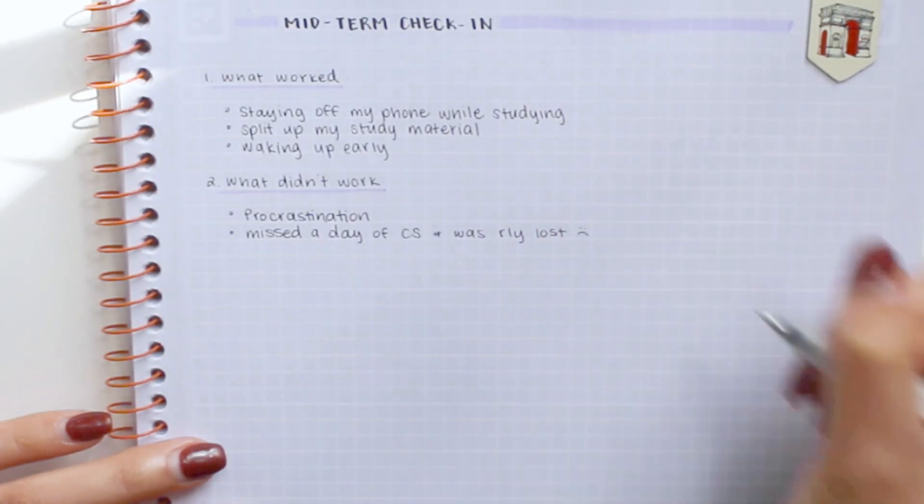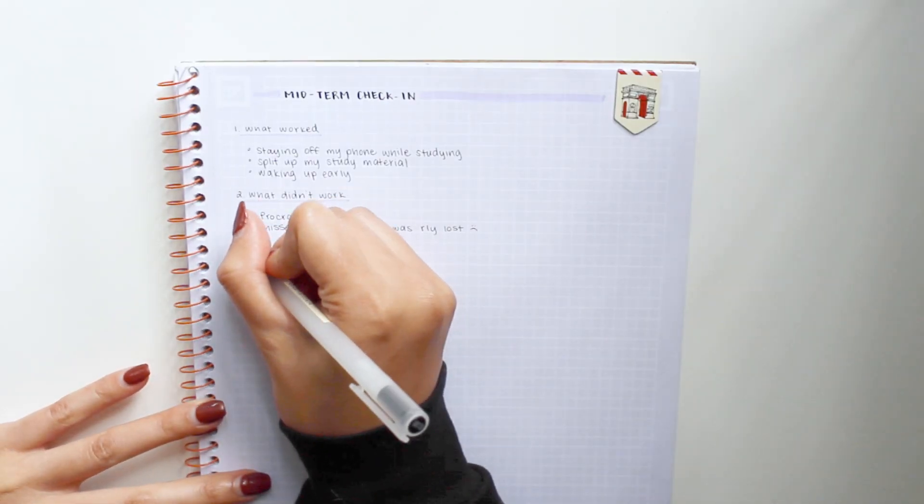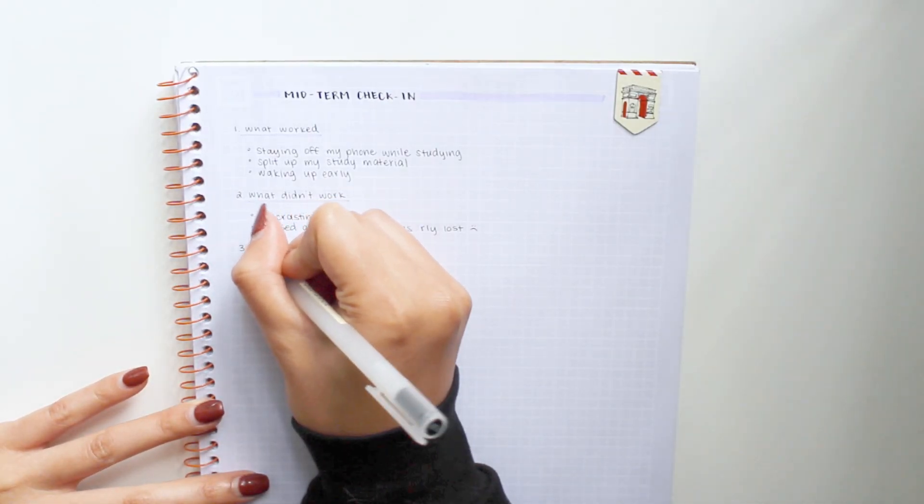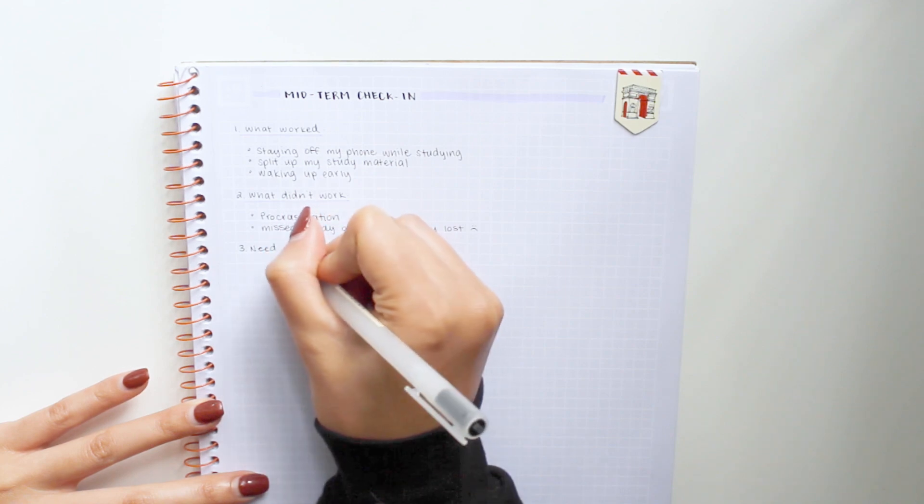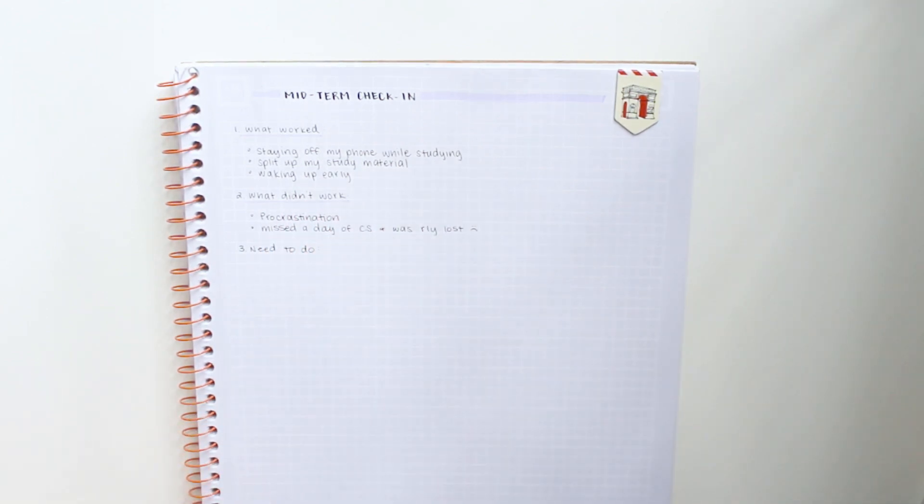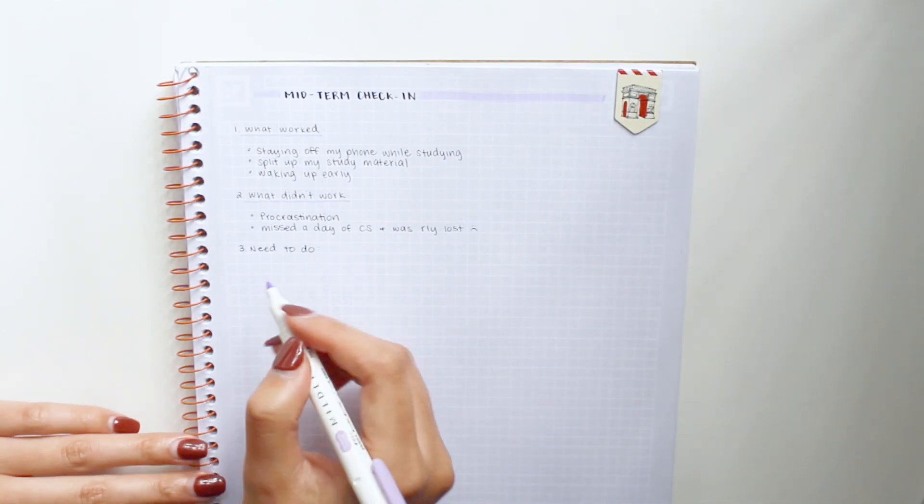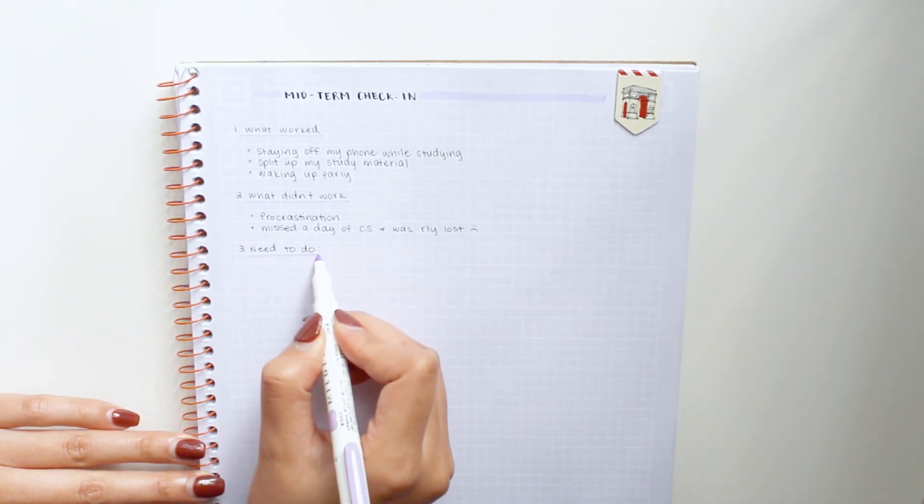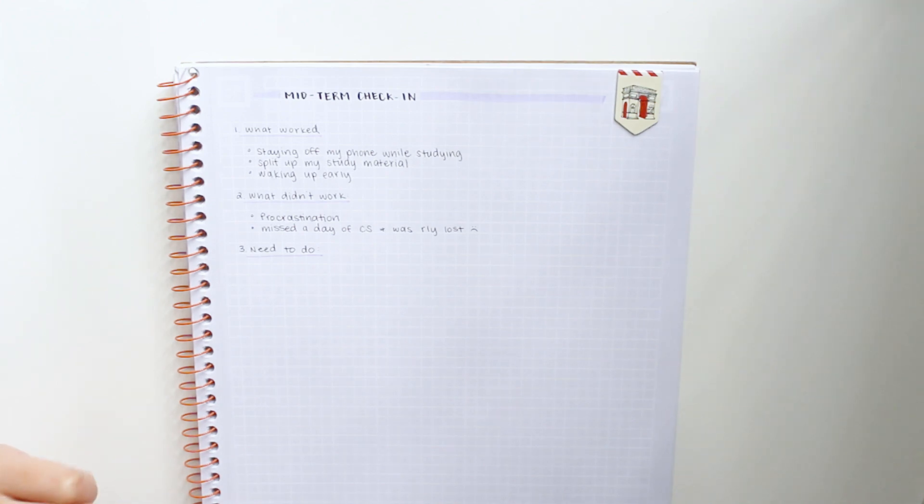The next thing you want to start asking yourself is: what do I need to start doing? And this could be anything, because again, your physical and mental health is correlated to how well you do in school. Maybe you want to practice mindfulness, or maybe you just need to map out your study schedule better for finals.